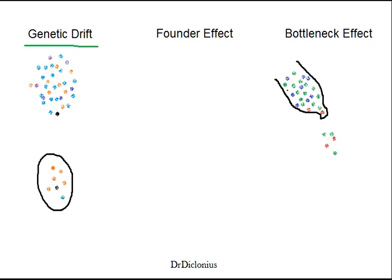The bottleneck effect is also a similar concept. It's that there's some catastrophic event that happens, maybe like an earthquake or a volcano or something. This is a more specific type of genetic drift. When this volcano or fire or whatever happens, only a few individuals survive. These individuals may not be the best fitted for the environment or the strongest, but they happen to survive because they were lucky. In this new bottleneck effect population, there are no more blue alleles. In the starting population there were very few red ones, but those red ones happened to survive the catastrophic event, and they are the ones able to pass on their alleles.